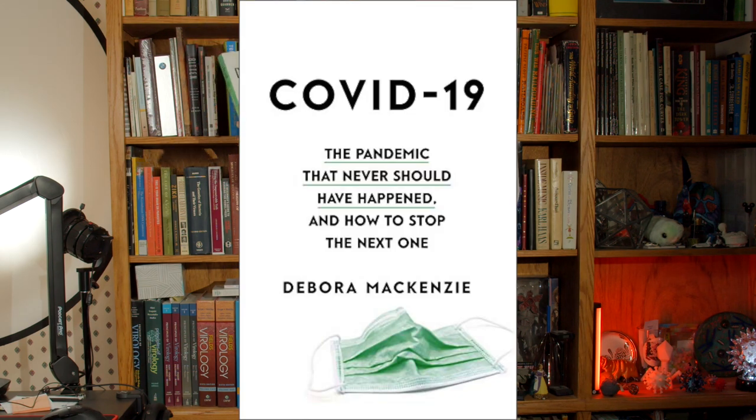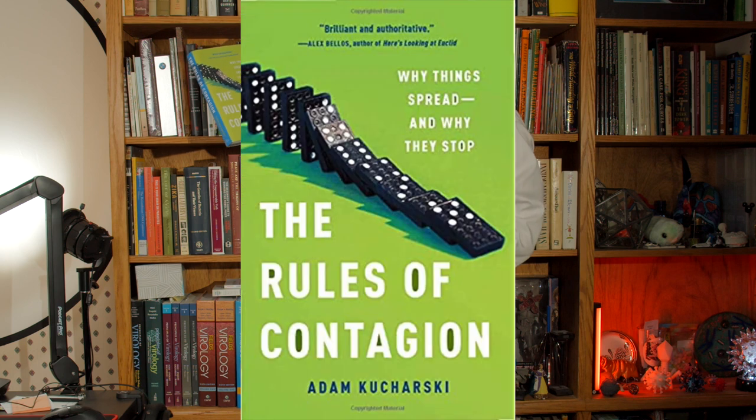Now here we have a book called COVID-19, The Pandemic That Never Should Have Happened and How to Stop the Next One. This again was sent to me. It's by Deborah McKenzie. I've yet to read it, but hopefully we'll read it soon and let you know how it is. Here we have The Rules of Contagion by Adam Kucharski. This is a great book about epidemiology. Adam was on an episode of TWIV not too long ago. He sent this to me.